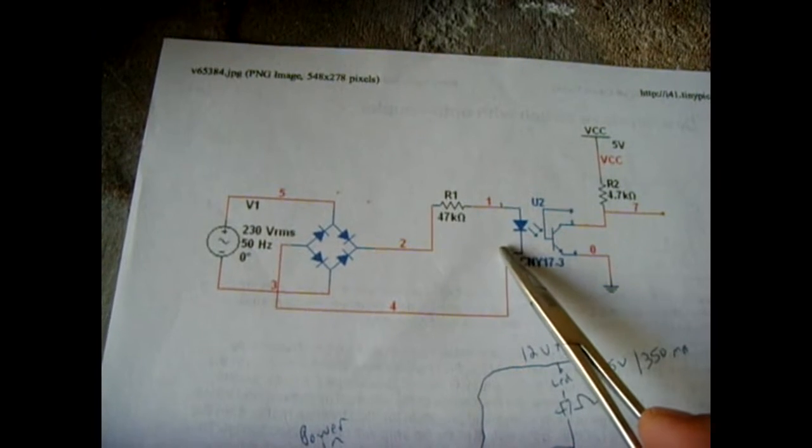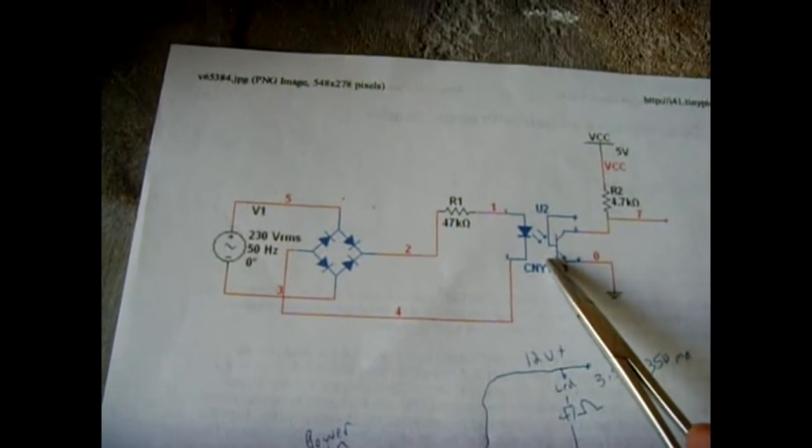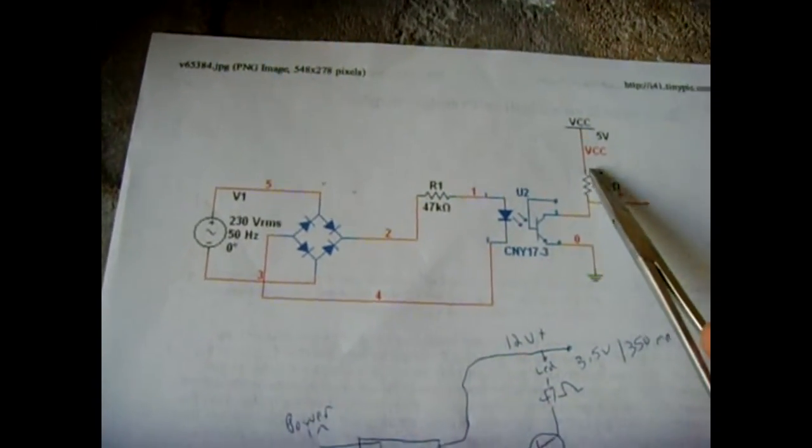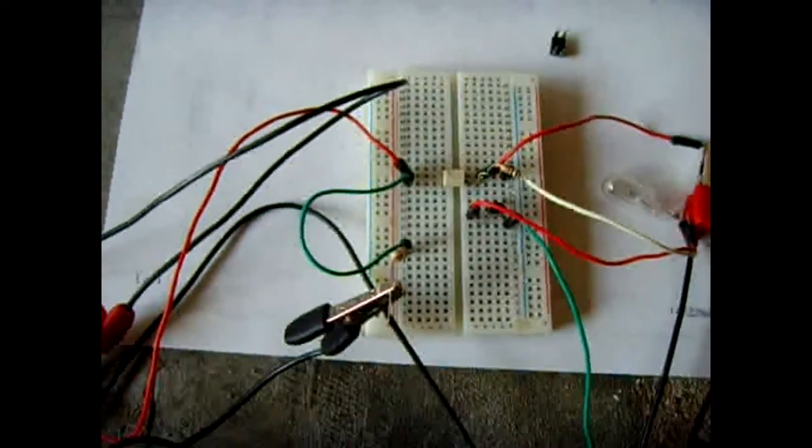When this circuit activates, the light comes on inside, shines across, and gets picked up by the phototransistor, activating this circuit. Great little circuit.